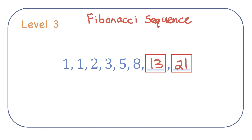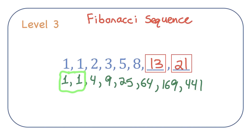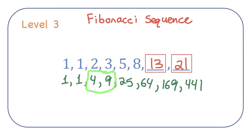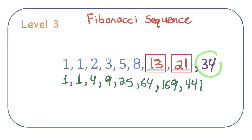There are other cool patterns in Fibonacci's sequence. For example, if I write the squares of each of these numbers: 1 squared is 1, 2 squared is 4, 3 squared is 9, and so on — notice if I add consecutive square numbers, so 1 plus 1, I get a number in Fibonacci's sequence. Add the next pair: 1 plus 4 gives 5, 4 plus 9 gives 13, and 9 plus 25 gives 34. For a formula, we could use a recursion formula: the value of term n equals term n minus 2 plus term n minus 1.